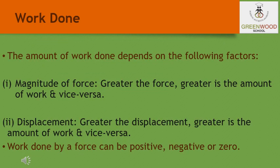There are two factors on which the amount of work done depends. First is the magnitude of the force: greater the force applied on a body, greater will be the work done, and vice versa. Second is the displacement: greater the displacement, greater is the amount of work done, and vice versa. Work done by a force can be positive, negative, or zero.